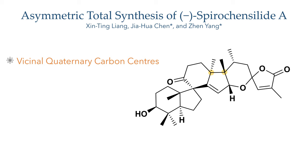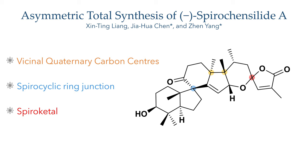Structurally, this compound is quite unusual and challenging as it bears two pairs of vicinal all-carbon quaternary centres, an unusual spirocyclic ring system, and an anomeric spiroketal. All of these features present significant challenges, which makes this total synthesis all the more noteworthy. So let's look at the retrosynthesis and how the authors planned to overcome these challenges.